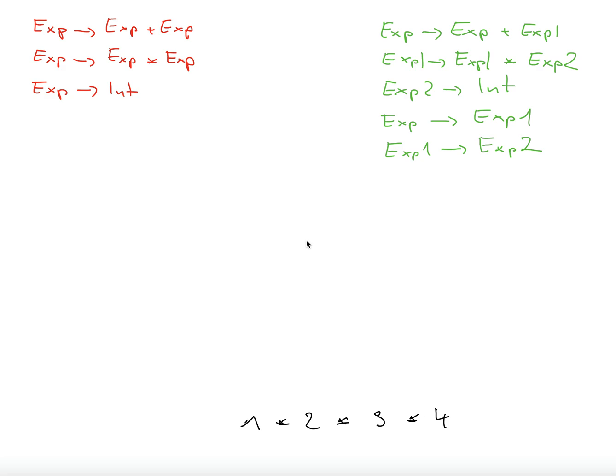I want to show an example of how to parse the string 1 times 2 times 3 times 4 with two different grammars.